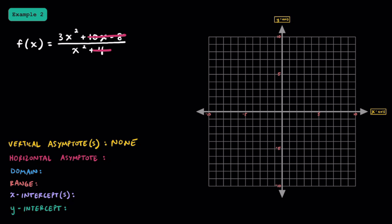Now let's find the horizontal asymptote. When we're looking for the horizontal asymptote, we really only care about the term in the numerator with the highest degree, and the term in the denominator with the highest degree. Remember there are two scenarios: one is when the degrees match on top and bottom, and the other when the degree on top is smaller than the degree on bottom. In this particular function, these degrees match. If you were thinking about taking the ratio of the leading coefficients, you're absolutely right. Our leading coefficient is 3 on top and 1 on bottom, giving us a ratio of 3. Our horizontal asymptote is y equals 3.